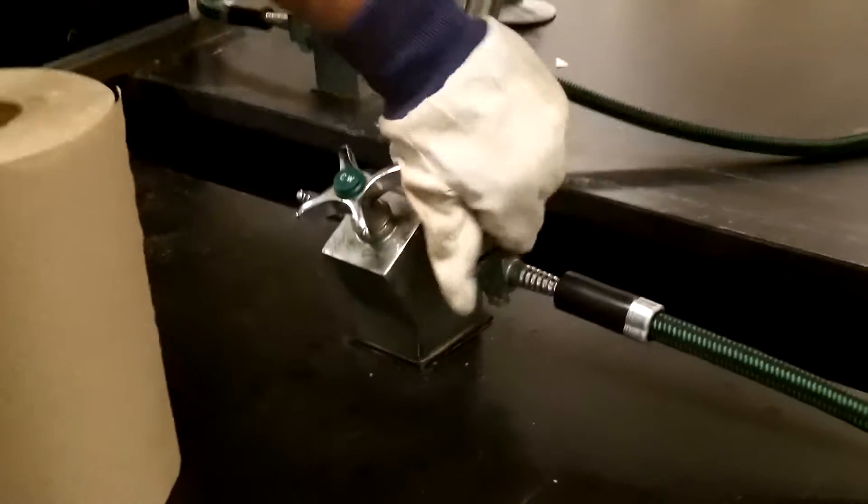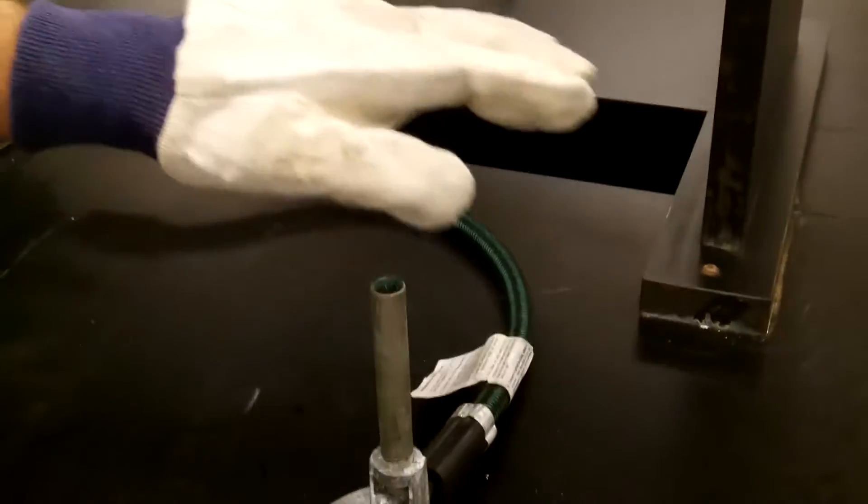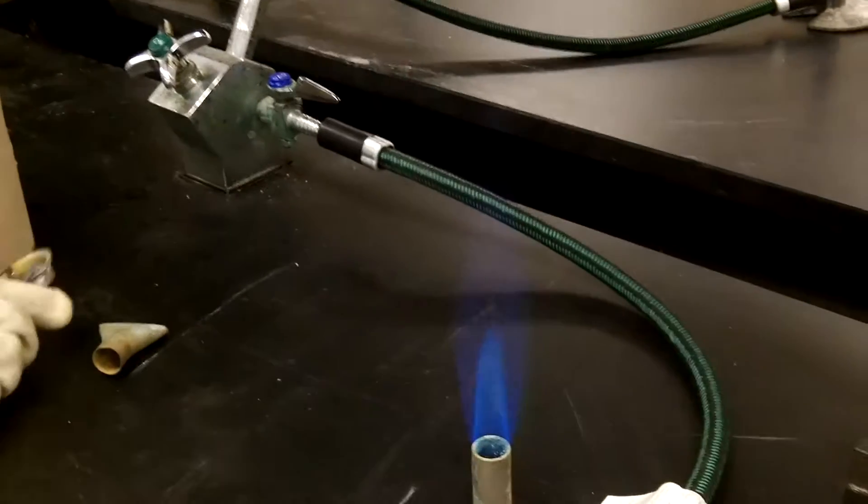Next, turn on the gas to the Bunsen burner. Make sure that there is gas coming out, and then light it with a striker.